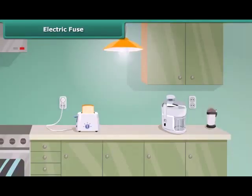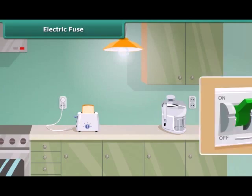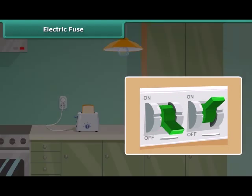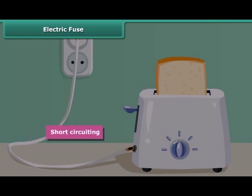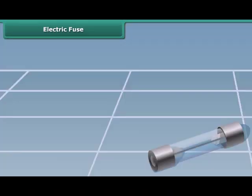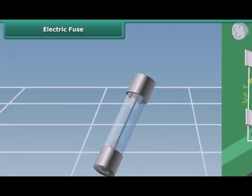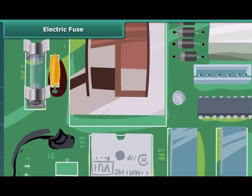Sometimes you may have seen the situation in your house where the fuse is blown off and the electric supply is cut off. This is because of the enormous amount of heat produced wherever there is an excess flow of current due to short circuiting, overloading, or insulation failures of appliances. A safety fuse is a device that protects an electric circuit, and the heating effect of electricity is used in this case.